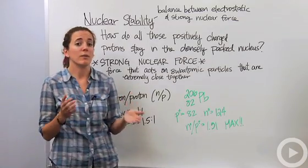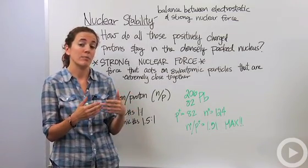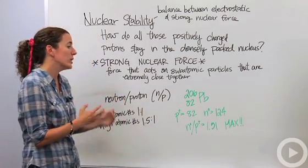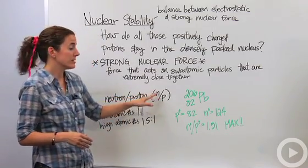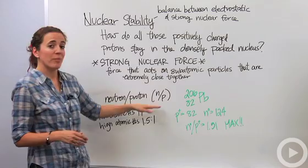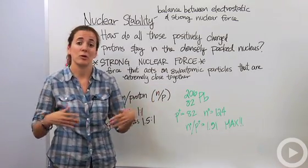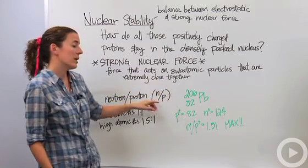Because we're talking about this balance between the electrostatic forces that are keeping them apart and the strong nuclear forces keeping them together, we have to have a good ratio of neutrons to protons, a stable ratio. If this ratio gets off balance, that's when the nucleus becomes unstable and it'll start emitting particles.